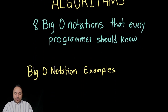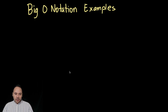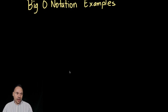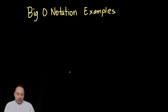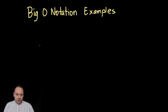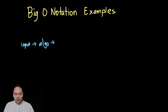Before going into the Big O notations, let's do a recap about why we need this. An algorithm is a set of steps on how to solve a problem. The algorithm takes an input and converts it into the desired output.